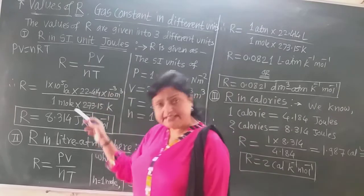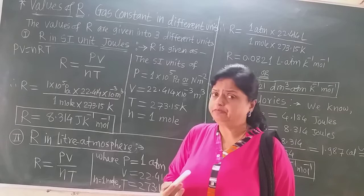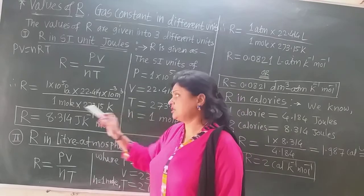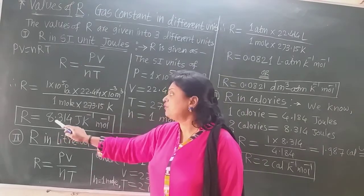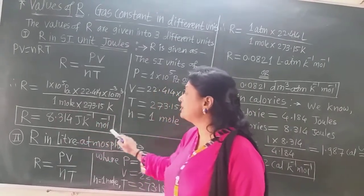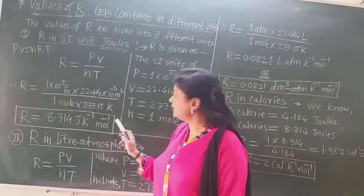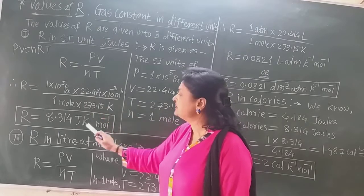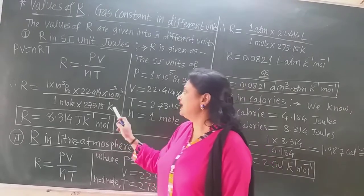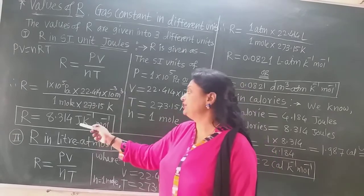Substituting all these values, we can calculate by logarithm table or with a calculator. The value of R comes out to be 8.314 joule per Kelvin per mole. Pascal or Newton per meter square multiplied by meter cube is converted into joules, giving units of joule per Kelvin per mole.